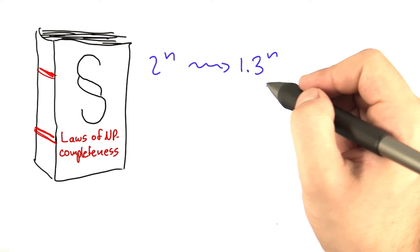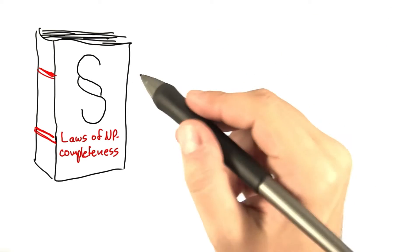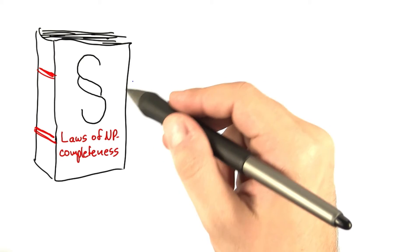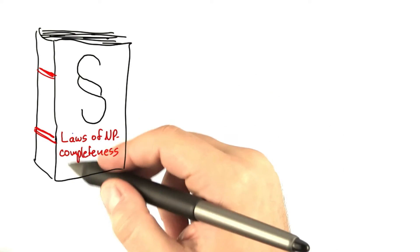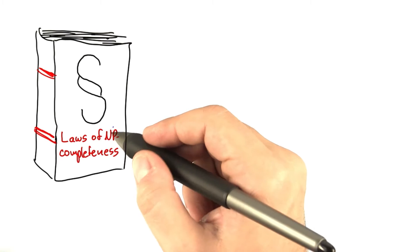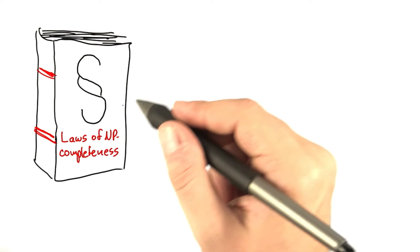which already makes many more instances solvable. But to conclude this unit, I want to show you another loophole in the laws of NP-completeness that is sometimes very, very useful and that actually not very many people know about.